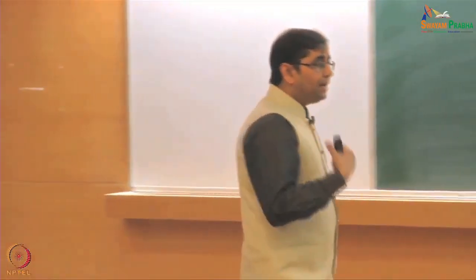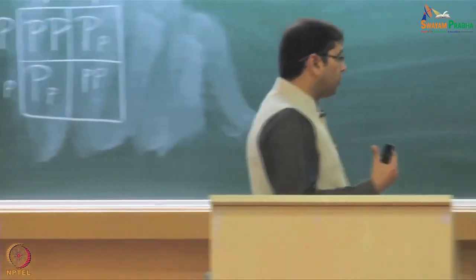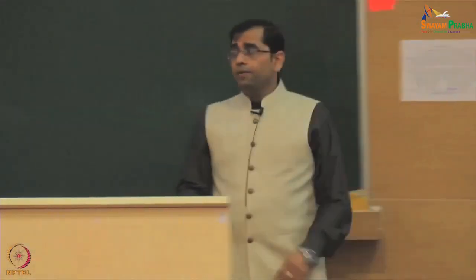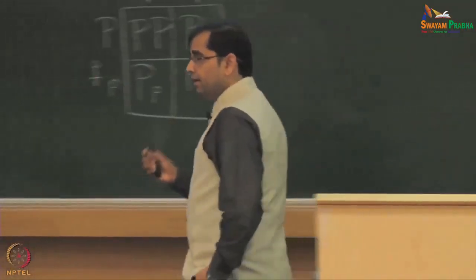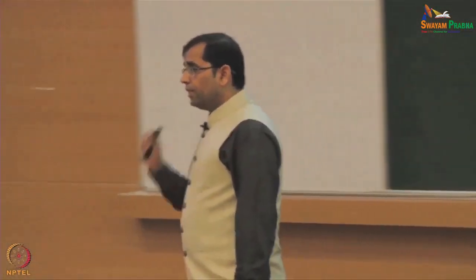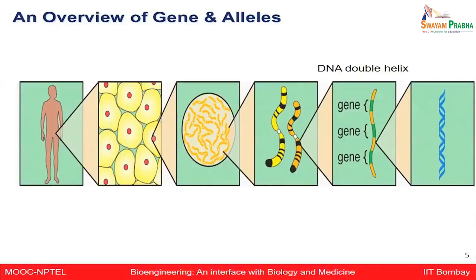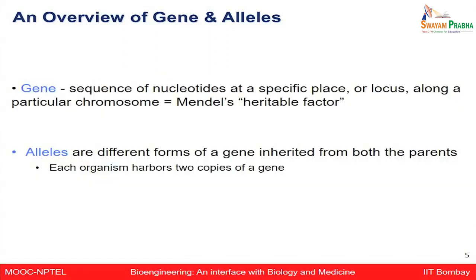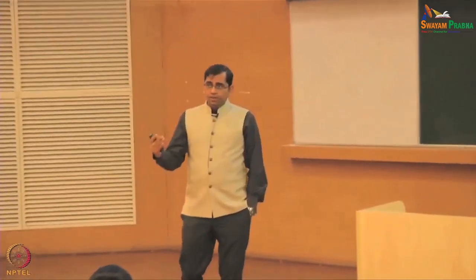Let's go back and think about it at the cell level. From individuals, we have billions of cells. Each cell contains a nucleus. Within those, we have DNA which contains chromosomes. From those, we have the genes. What Mendel was thinking — what we now call genes — is the sequence of nucleotides at a specific place which contains heritable factors that can be inherited from one to the next generation.